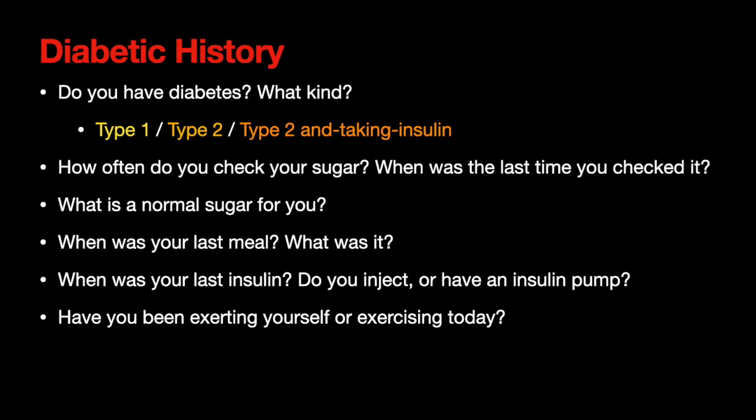If someone has an insulin pump: for those who don't know, insulin pumps normally clip onto a belt with a small subcutaneous cannula. Some fancy ones either deliver insulin at a specified rate or measure blood sugar and deliver insulin in response. If someone is hypoglycemic, one of the first things you should do is see if you can turn off their insulin pump.